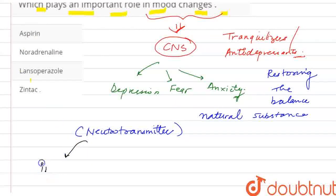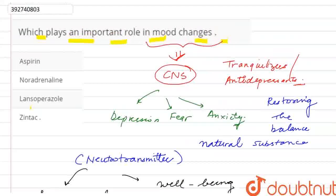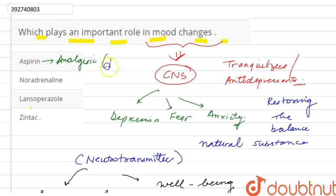This improves the mood and a feeling of well-being. Now, first we have Aspirin. You know what aspirin is — it is widely used as an analgesic, which is used to cure any type of body pain. So this is a painkiller, not related to mood change.